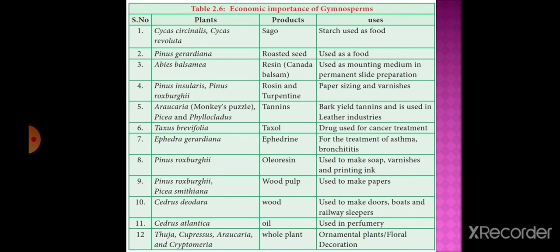Araucaria, commonly called monkey's puzzle, Pseudotsuga, and Phyllocladus produce tannin, which is used in leather industries. Taxus brevifolia produces taxol, a drug used in cancer treatment.